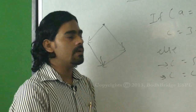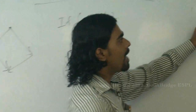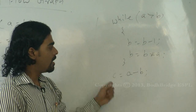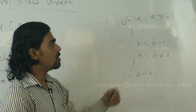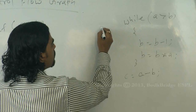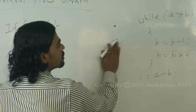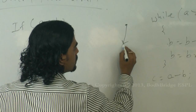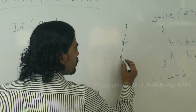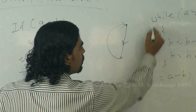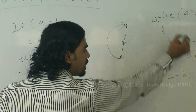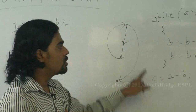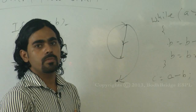Let us suppose we have another example. Here, while a is greater than b: b is equal to b minus a, b is equal to b multiplied by a, and c is equal to a minus b. How to draw this? Here also, my execution will start at the while condition. From the while condition, if it is true, it will come down, execute this, execute this, and once again it will go up — this loop will run again and again. Once this condition fails, it will come out and execute the last line. So this is how my control flow is going to execute.